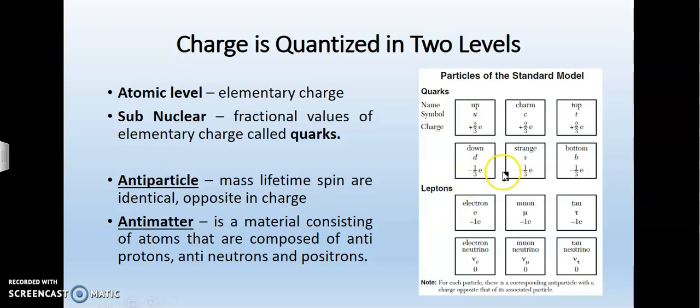For an antiparticle, its mass, lifetime, and spin are identical but opposite in charge. Antimatter is a material consisting of atoms that are composed of antiprotons, antineutrons, and positrons. A positron is a fancy word for an anti-electron. We're going to explain that in more detail coming up.